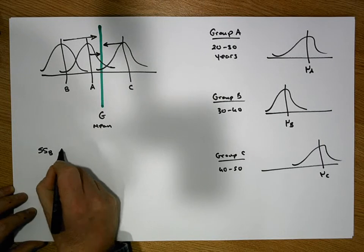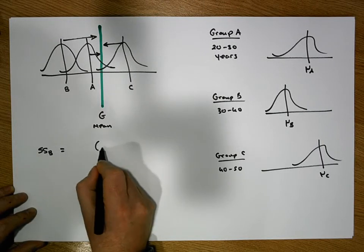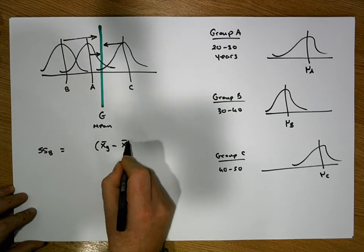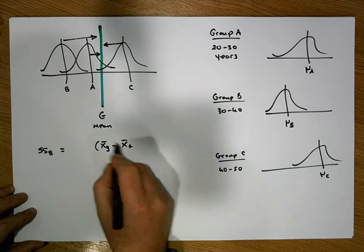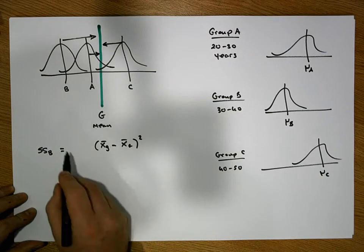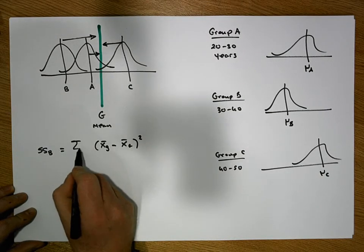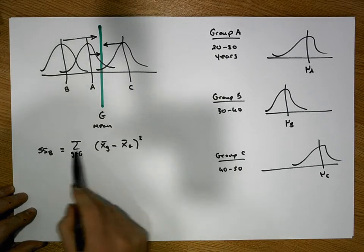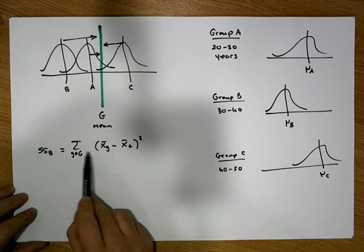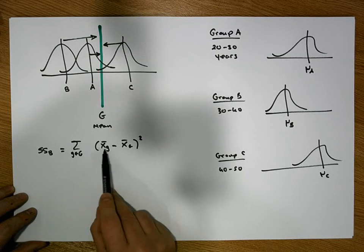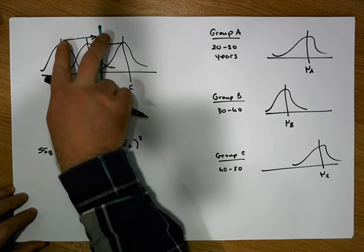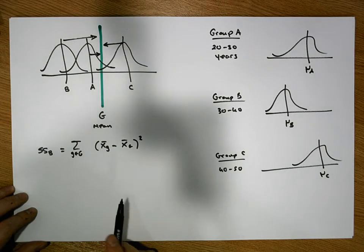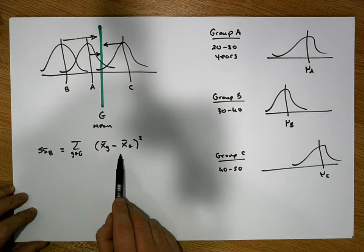The sum of squares between is simply equal to the distance that each group mean value is away from the global mean, x-bar of g. We square that and calculate this for all of the groups. This gives us the total square distance that our group means are away from this global mean, so this is a measure of dispersion.